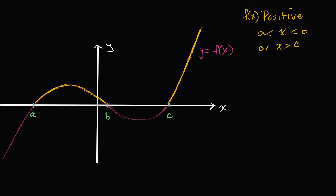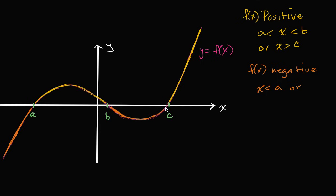So when is f of x negative? f of x is going to be negative if x is less than a, or if x is between b and c — we can see that f of x is below the x-axis there. And I'm not saying less than or equal to, because at b or c the value of the function f of b is zero and f of c is zero. That's where we are actually intersecting the x-axis.